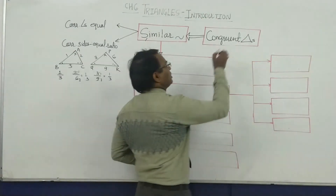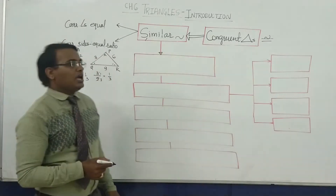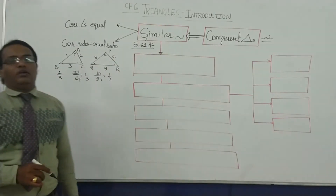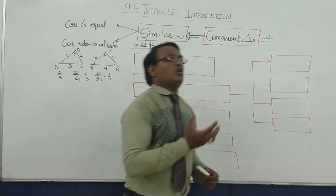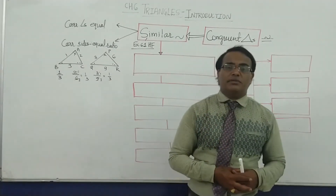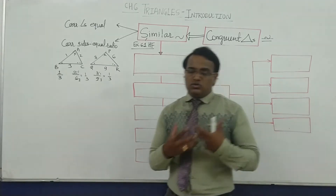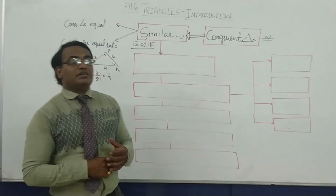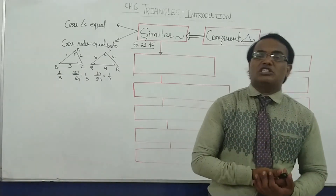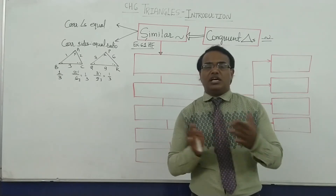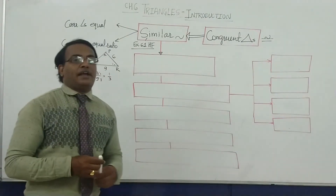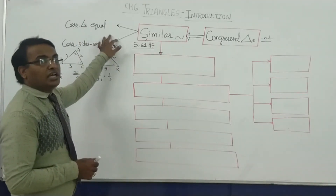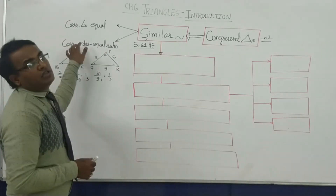This is the symbol for similarity. Based on the concept of similarity, exercise number 6.1 is there, which I am giving as homework. Two circles are said to be similar if they have the same radius or diameter. Two line segments are similar if they have equal length. Two angles are similar if they have the same degree measurement. Similarly, we define similar triangles — two triangles are similar if the three corresponding angles are equal and their sides are in the same ratio.